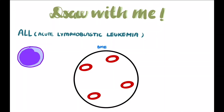Let's try to make a lymphoblast. As compared to a myeloblast, a lymphoblast is characteristically smaller. Let's make a broad outline of a lymphoblast, keeping in mind its relationship with a normal red blood cell for comparison. So here is a broad outline of a lymphoblast.